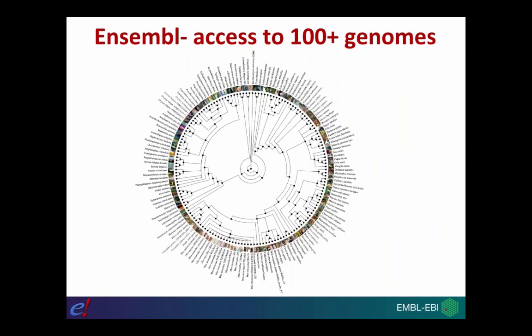We have over a hundred genomes in Ensembl now, and the Ensembl project is dedicated to vertebrate genomes. We try to cover the broadest taxonomic space possible, including human, the other great apes, a large number of other primates, rodents, and other placental mammals that have evolutionary, medical, or agricultural importance. We also have marsupials, monotremes, as well as a large number of birds, reptiles, fish, and amphibians.